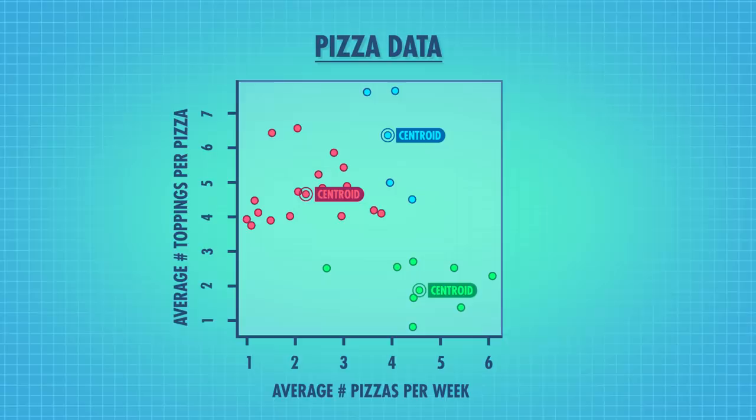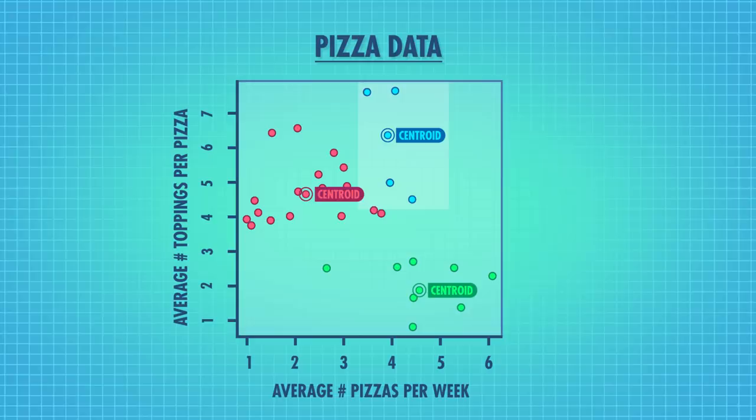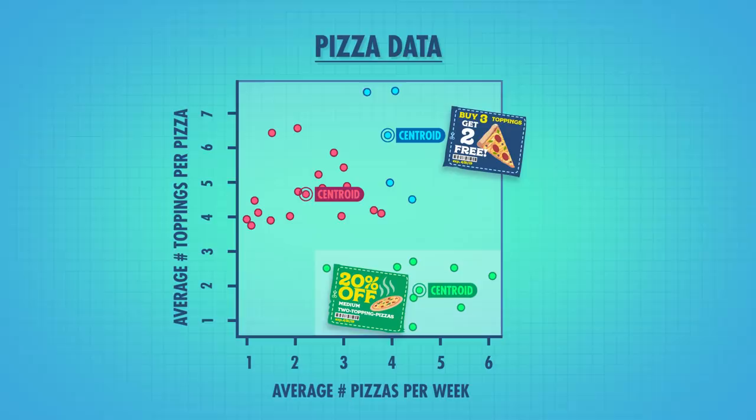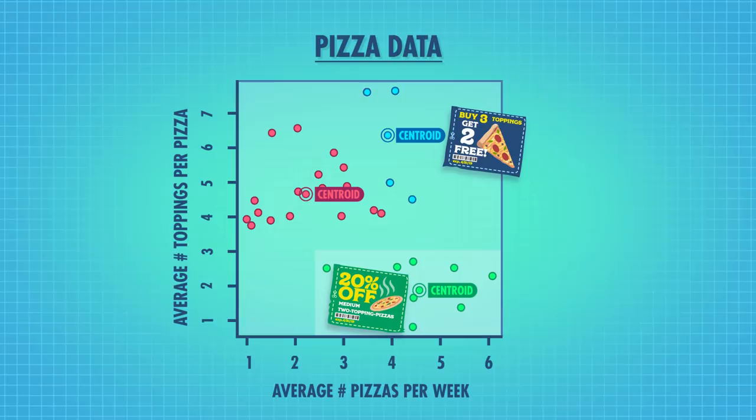We can then look at the clusters and decide which coupons to send. For example, this group doesn't order many pizzas each week, but when they do, they order a lot of toppings — so they might like the 'buy three toppings, get two free' coupon. Whereas this group, who orders a lot of simple pizzas, might like the '20% off medium two-topping pizzas' coupon. This is probably also the pineapple group, since really there aren't that many things that pair well with pineapple and cheese.